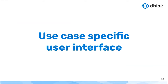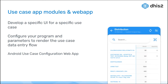Moving to the last part: the use case specific user interface. A use case specific user interface means we have implemented the possibility to offer a different user interface and a different user experience based on the program that is selected. Three groups have been working on this: the LMIS team, the Cell Digitus team, and the Android team. This is a huge step towards increasing our functional extensibility.